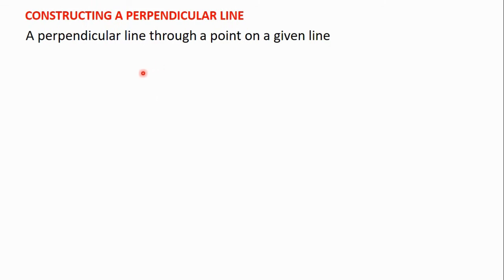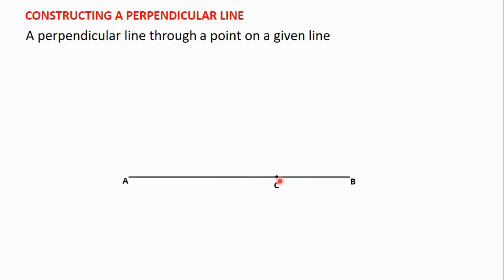In this video, we are going to learn how to draw a perpendicular line to another line through a point on the line. Let's say we have line AB and there is a point on line AB called point C. We are going to learn how to draw a line through point C such that it and line AB will be perpendicular, meaning the angle formed between them will be 90 degrees.